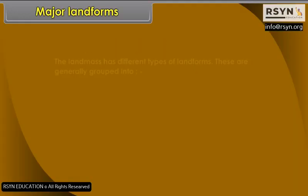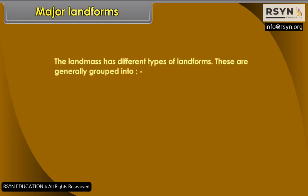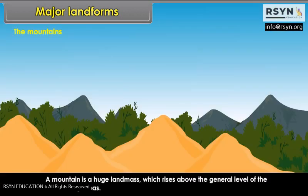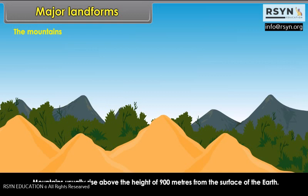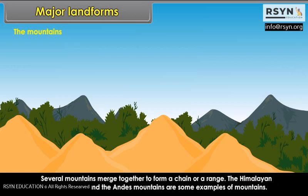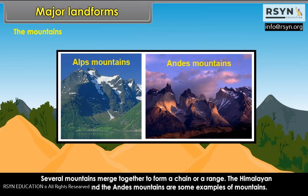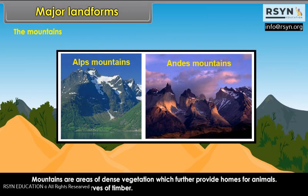The land mass has different types of landforms. These are generally grouped into mountains, plateaus, and plains. A mountain is a huge land mass which rises above the general level of the surrounding areas, usually above 900 metres from the surface of the earth. Several mountains merge together to form a chain or a range. The Himalayan range, the Alps, and the Andes mountains are some examples. Mountains are areas of dense vegetation which provide homes for animals, and forests are rich reserves of timber.